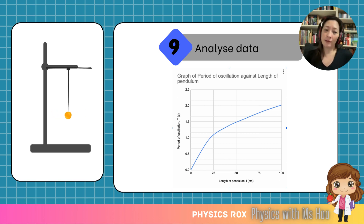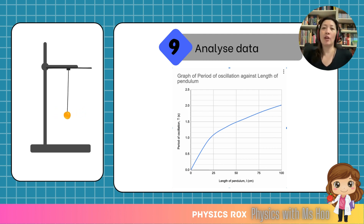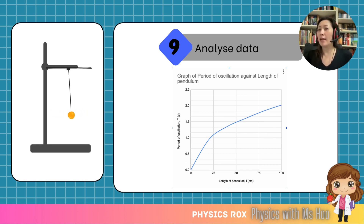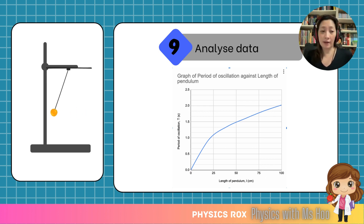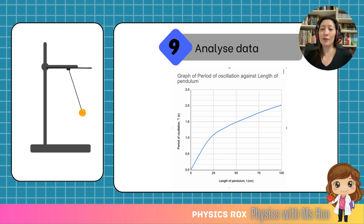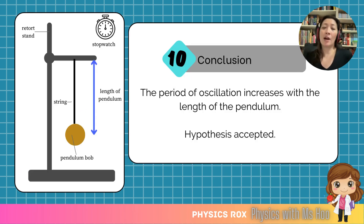Now that we have our graph, we can come up with a conclusion. The conclusion is always based on our hypothesis — which stated that the increase in the length of pendulum will result in an increase in the period of oscillation. Looking at the graph, the hypothesis is true because the graph shows a positive trend. The conclusion is that the period of oscillation increases with the length of pendulum, and the hypothesis is accepted.